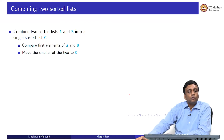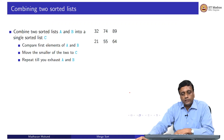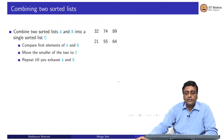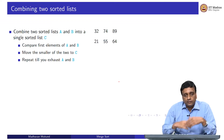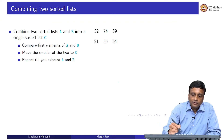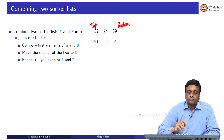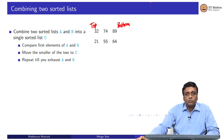I compare the first elements, move the smaller of the two to C, and repeat until I exhaust the two lists. For example, suppose the first pile has three papers: 32, 74, 89, and the second pile has papers where 32 and 21 are visible at the top. I start from the left hand side. I compare 21 and 32, and since I want ascending order, the smaller of the two is the smallest overall. So I move 21 out.